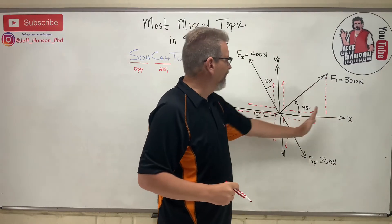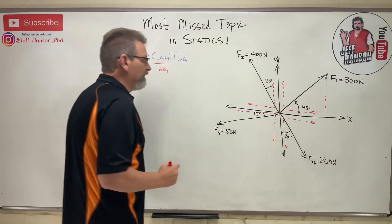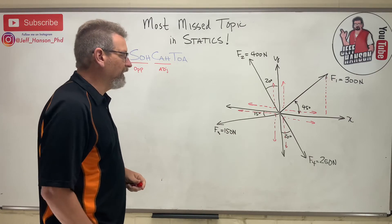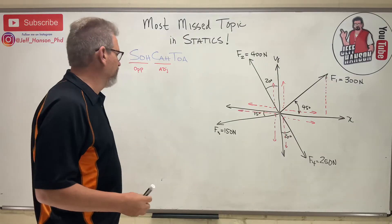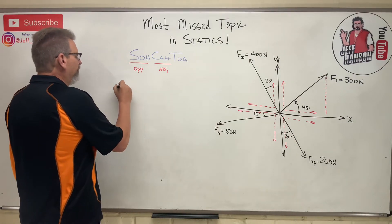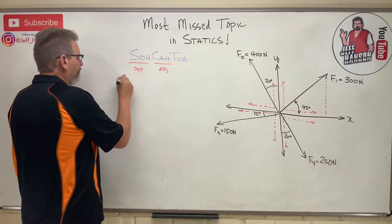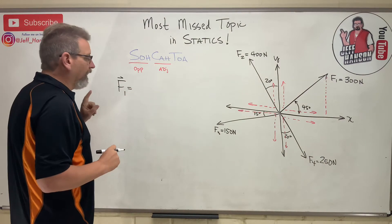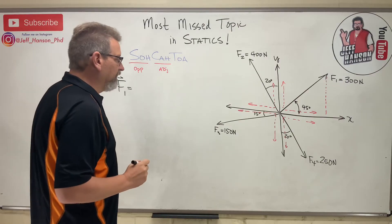So in this case, the adjacent side is the x side and the opposite side is the y side. If this is y, then that's y over there. So here, let's do this right quick. Let's see if we can write these vectors. Now I know this should be easy stuff if you're good at it. And that is like, this vector F1...